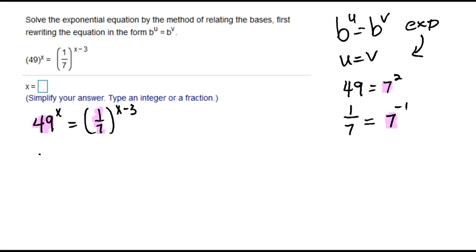So let's make those changes. 49 is 7 squared, 1/7 is 7 to the negative 1. Then I'm going to use my power rule for exponents and multiply these powers together. So that's going to give me 7 to the 2x equals 7 to the negative 1 times x minus 3.